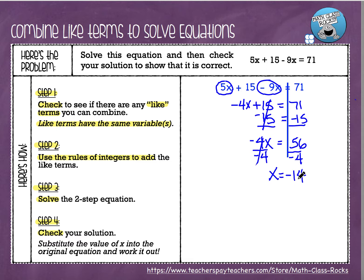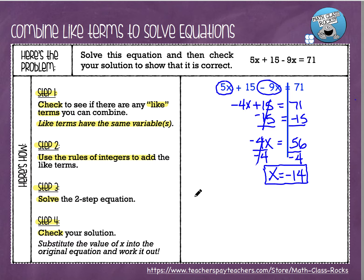Now we're on step 4 — we're going to check our solution. A lot of students think that when we say check your solution, we mean go back and look at your work and make sure you didn't make a mistake. But that's not what we mean. What we mean is you're going to take this value — this negative 14 — and substitute the x in the original equation with negative 14. In this case, we have two x's in our equation, so we're going to be replacing both x's with negative 14.